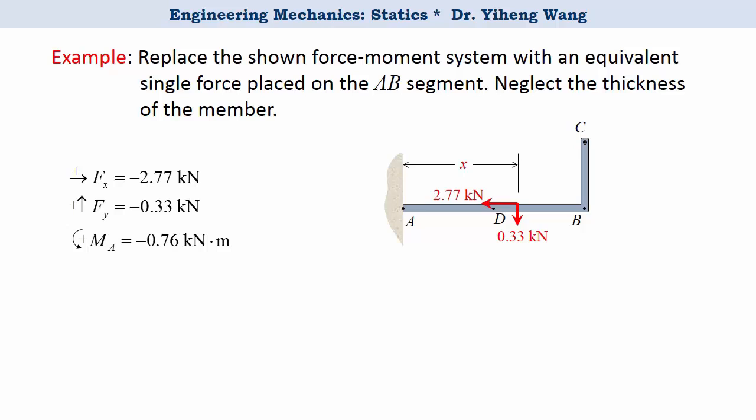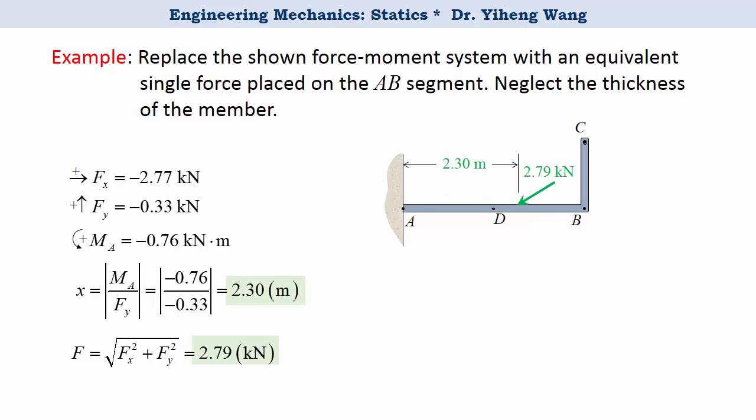There are other ways to move the forces as well, but according to the problem statement we need to move the forces along the AB segment. Now we need to determine the location x. Since only the vertical force component can create moment about point A, and we know that it must create a negative 0.76 kilonewton meter moment about point A. Based on that information, we can calculate x to be the magnitude of the moment divided by the magnitude of the vertical force component to be 2.3 meters. And we can also calculate the magnitude of the resultant force. And now we have successfully replaced the original applied force moment system with a single force. Its location is specified, and this is the equivalent system as the original system.